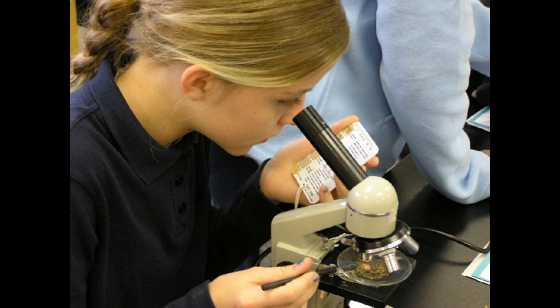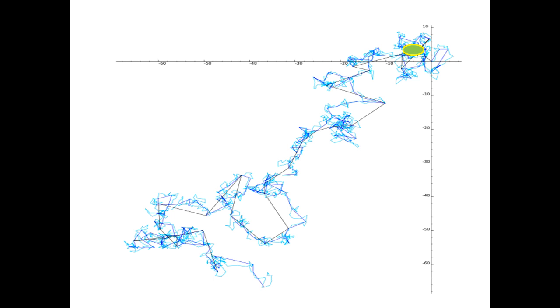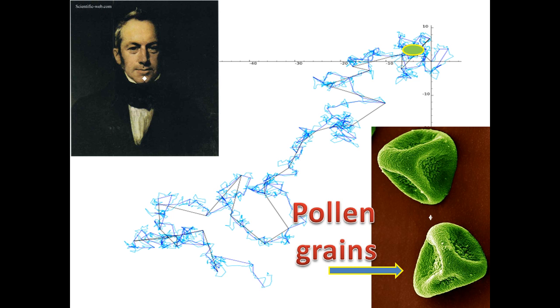We can't see these particles move even under a very good microscope. In 1827, Robert Brown observed that pollen grains floating in water moved in a jerky but random fashion.